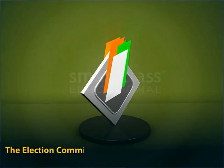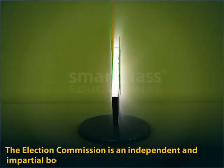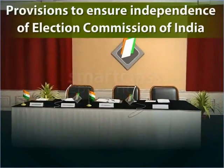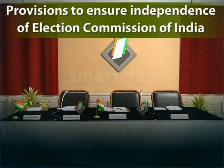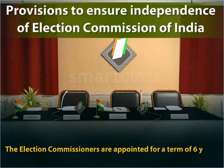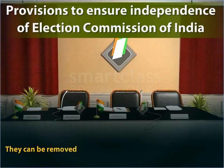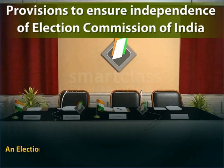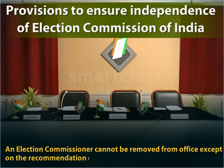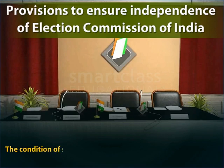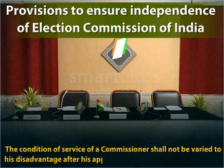The Election Commission is an independent and impartial body. There are several provisions which ensure its independence. The Election Commissioners are appointed for a term of six years, or they can hold office till they attain the age of 65 years. They can be removed from office in the same manner as a Judge of the Supreme Court. An Election Commissioner cannot be removed from office except on the recommendation of the Chief Election Commissioner. The conditions of service of a Commissioner shall not be varied to his disadvantage after his appointment.